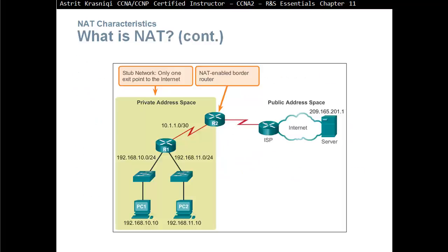For example, here we have NAT enabled on the border router. Everything in our local area network can have private addresses. Private addresses are not unroutable — this router will route between networks. However, they are not routed by internet routers because all of them have an access control list preventing private addresses from appearing as source addresses on the internet. The ISP will deny any packets with a private source address.